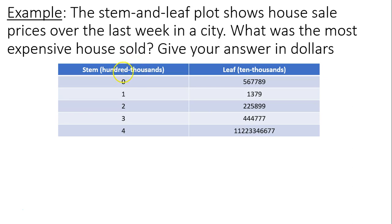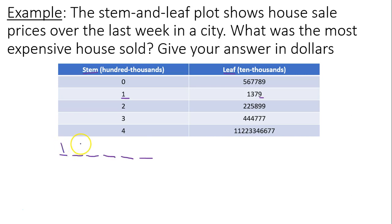In my stem and leaf plot, the stem is representing my bigger place value, which in this case is the hundred thousandths place, and my leaf is representing a smaller place value, in this case the ten thousandths place. It's important to note that our numbers will be in the hundred thousandths, meaning there will be six digits. So for instance, if my stem is 1 and my leaf is 9, this would mean a 1 in the hundred thousandths place and a 9 in the ten thousandths place, and everything else is going to be a 0 — that represents the price of one hundred ninety thousand.